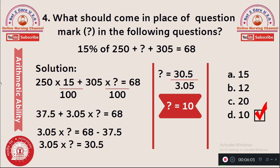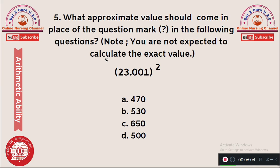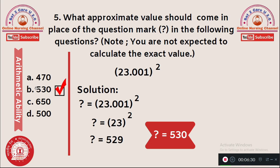Question 5: What approximate value should come in place of the question mark? Note: you are not expected to calculate the exact value. 23.001² = ? Options: A) 470, B) 530, C) 650, D) 500. Since 23.001 ≈ 23, we compute 23² = 529. The closest option to 529 is 530. Option B, 530, is the right answer.